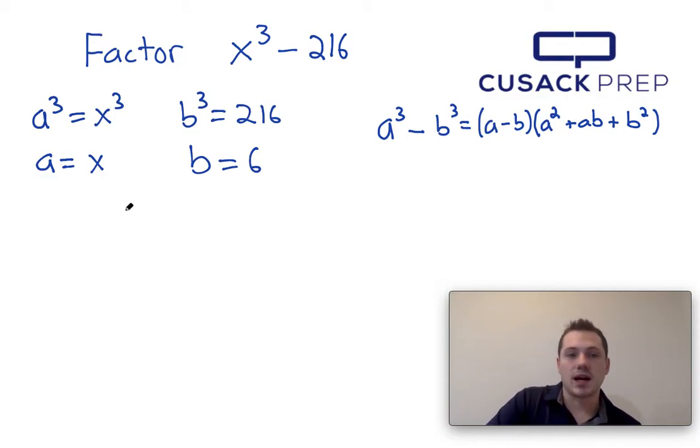Now that I know what a and b are I can proceed to factor it. So a minus b would become x minus 6.